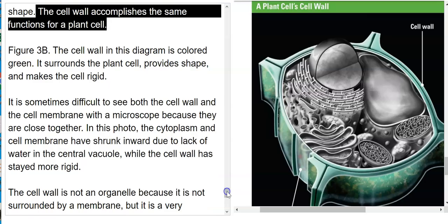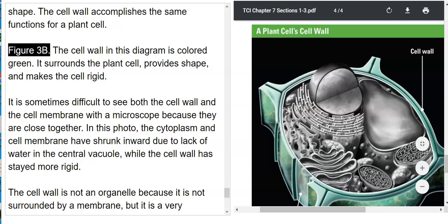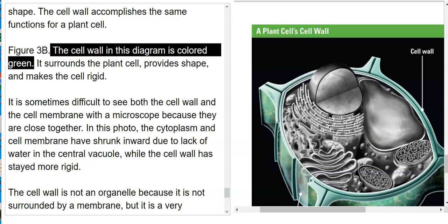In figure 3B, the cell wall on this diagram is colored green. It's not necessarily green, but we're going to color it green. It surrounds the plant cell, provides shape, and makes the cell rigid. It's the chloroplast that makes a plant green.